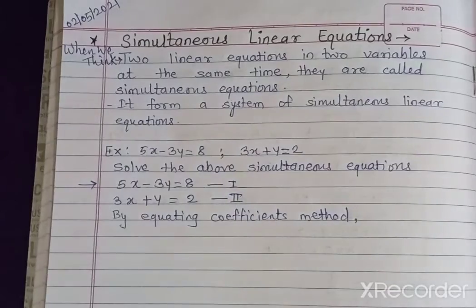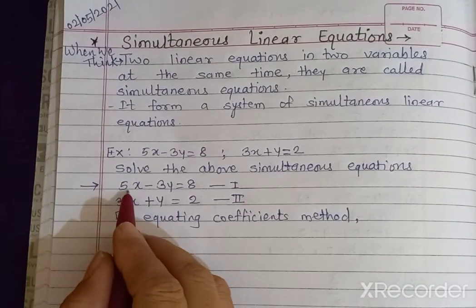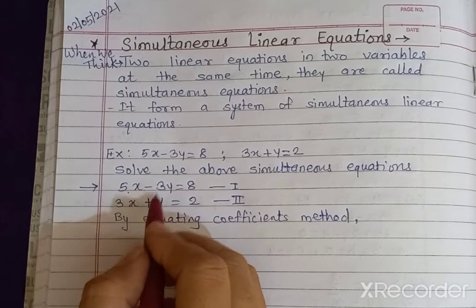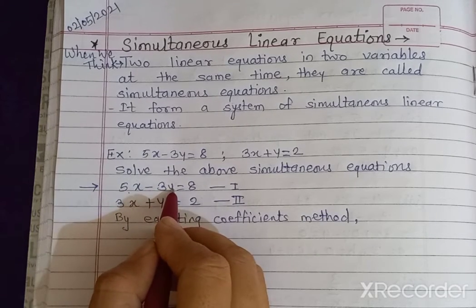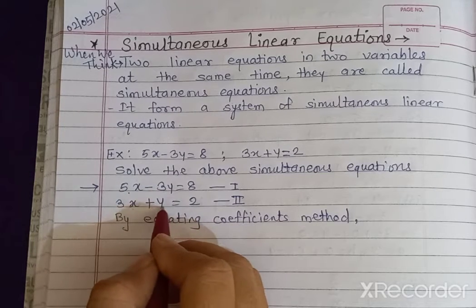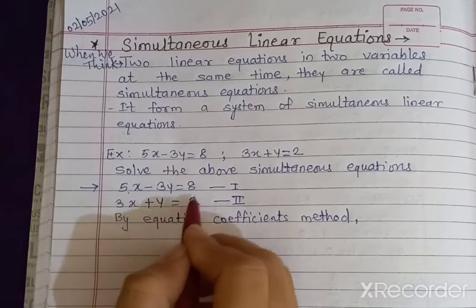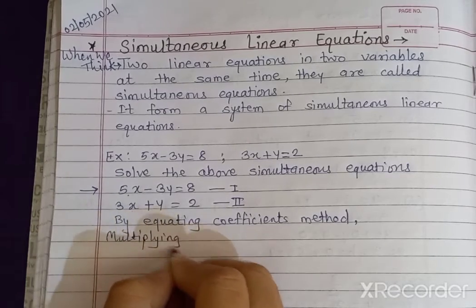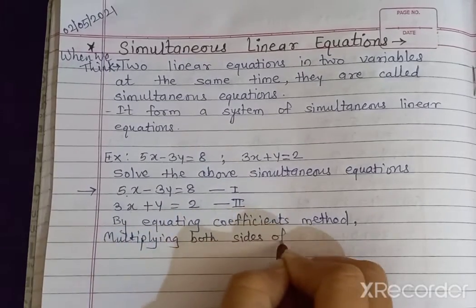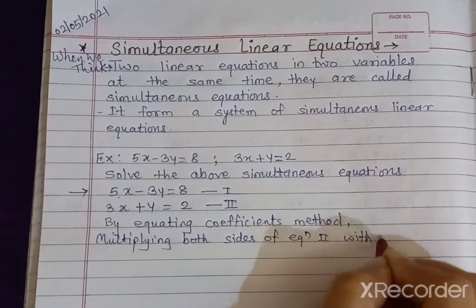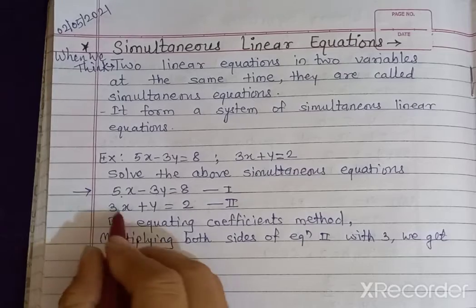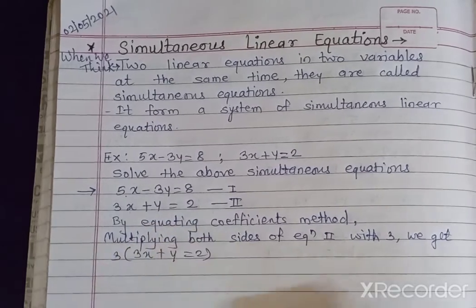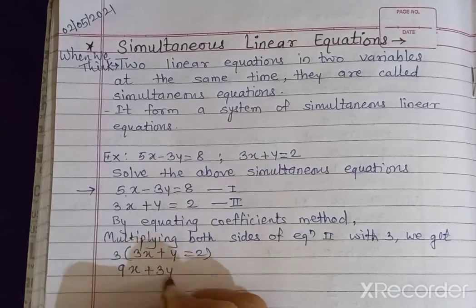We are going to equate any of the coefficients. Looking at the first and second equations, the second equation will be multiplied by 3, because in the first equation we have 3y. So we are going to make the coefficients of y the same. The whole second equation should be multiplied by 3. Multiplying both sides of equation 2 by 3 gives us 9x plus 3y is equal to 6.